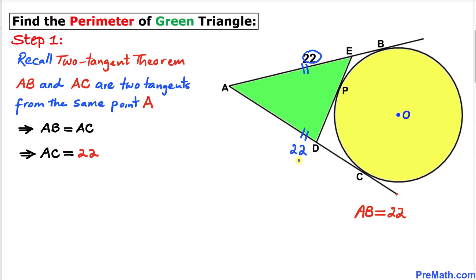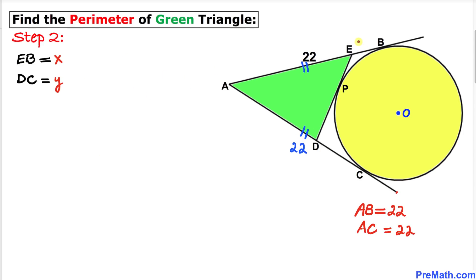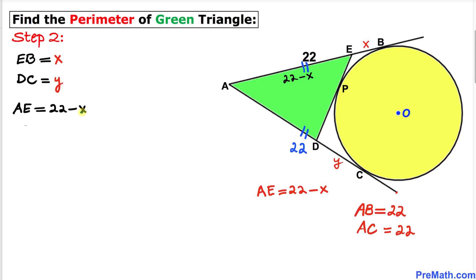Now let's suppose that line segment EB is x units and line segment DC is y units. Since the whole length AB is 22 units and EB is x, the length AE is 22 minus x. Likewise, since AC is 22 and DC is y, the length AD is 22 minus y.